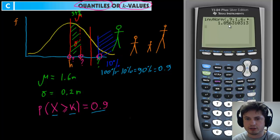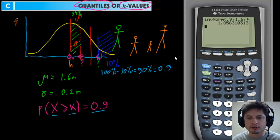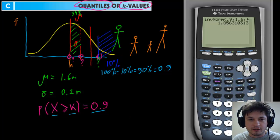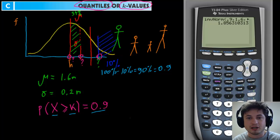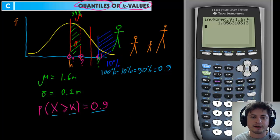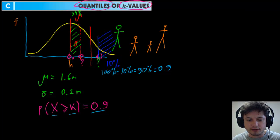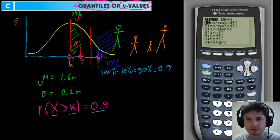The answer comes out to approximately 1.86 meters. So the height of the top 10 percentile of students at this school is about 1.86 meters, or 1 meter 86 centimeters. That's really how you do K-values or quantiles — using the InvNorm button on your calculator.